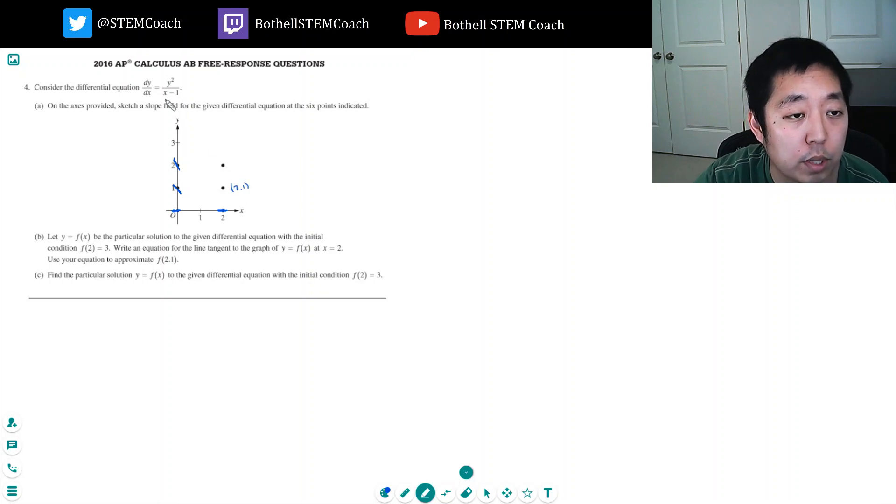So what I'm doing is I'm just plugging in x equals 2, y equals 1, that's positive 1. And then for x equals 2 and y equals 2, that's 4 over 1. That's even steeper. Okay, so something like that.